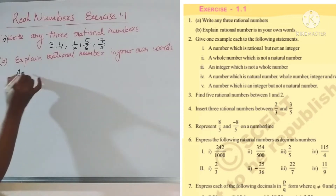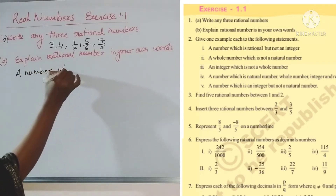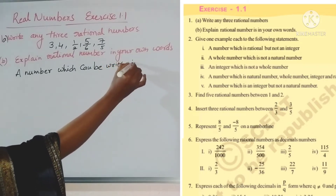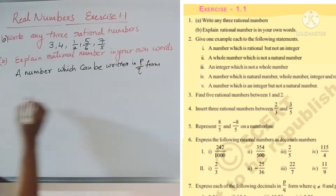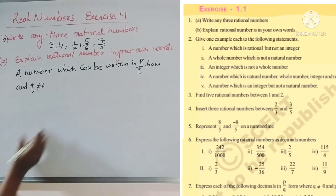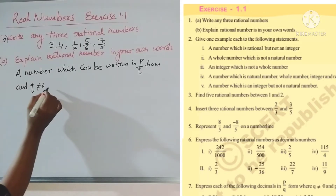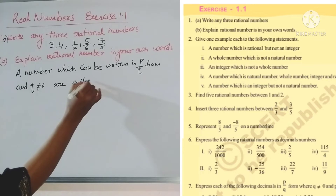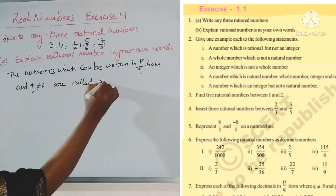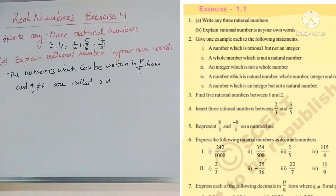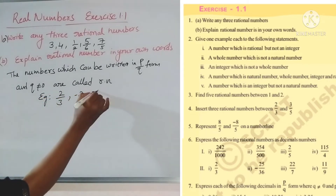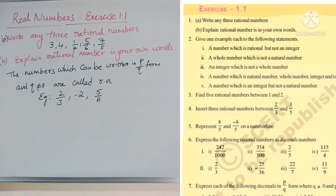Part b: Explain rational number in your own words. A rational number is a number which can be written in p by q form, where q is not equal to zero — the denominator cannot be zero. Numbers satisfying this are called rational numbers. We can give examples like two by three, minus two, five by six, and so on.